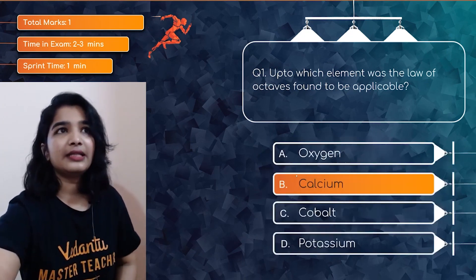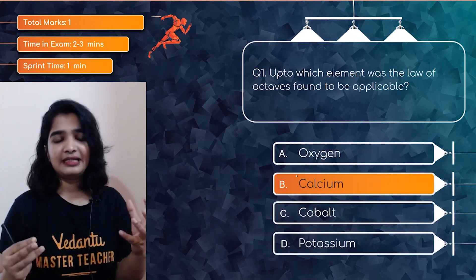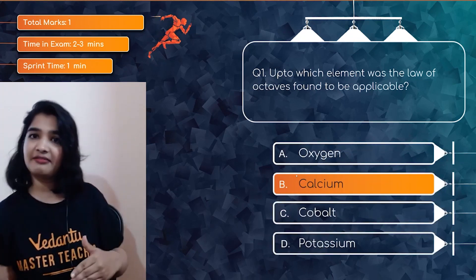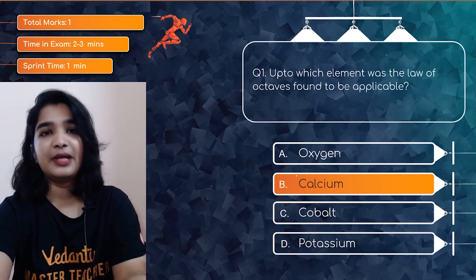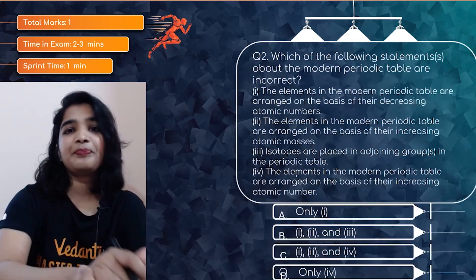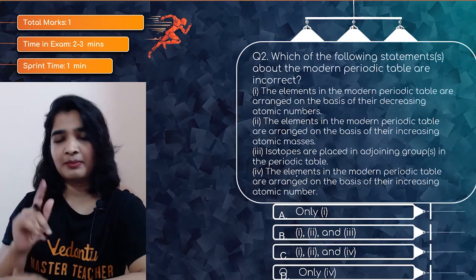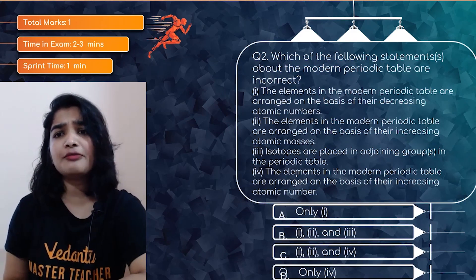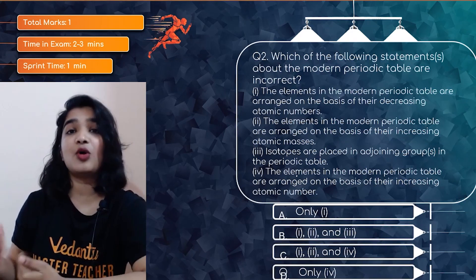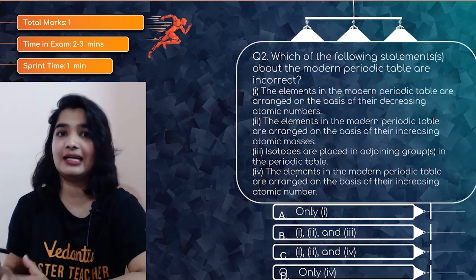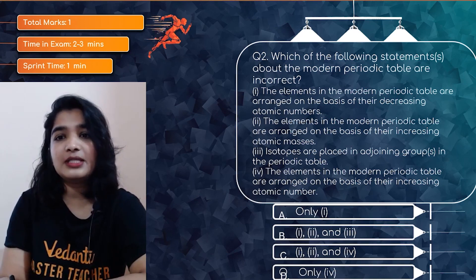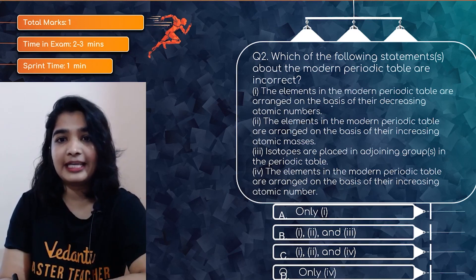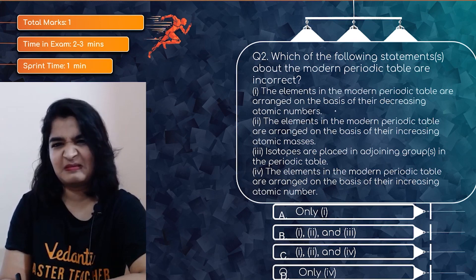After calcium, there weren't any similarities in the properties of every eighth element, and that is the reason this is one of the limitations of Newland's Law of Octaves. Question number two is again one mark. Which of the following statements about the modern periodic table are incorrect? Let's go through the statements. Statement one: the elements in the modern periodic table are arranged on the basis of their decreasing atomic numbers — this is false.